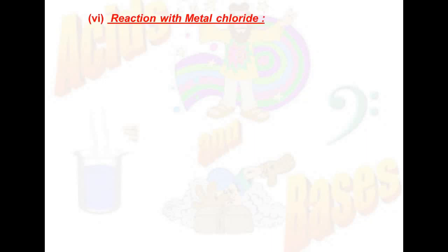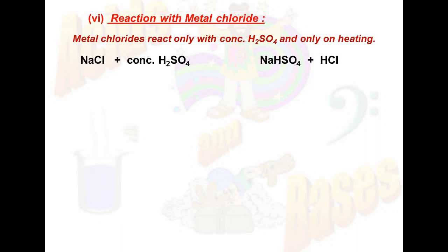Sixth reaction is reaction with metal chloride. Metal chlorides react only with concentrated sulfuric acid and only on heating. For example, NaCl reacts with concentrated sulfuric acid below 200 degrees Celsius. This is an important reaction to give sodium bisulfate plus HCl gas. This reaction is used for the lab preparation of HCl gas.